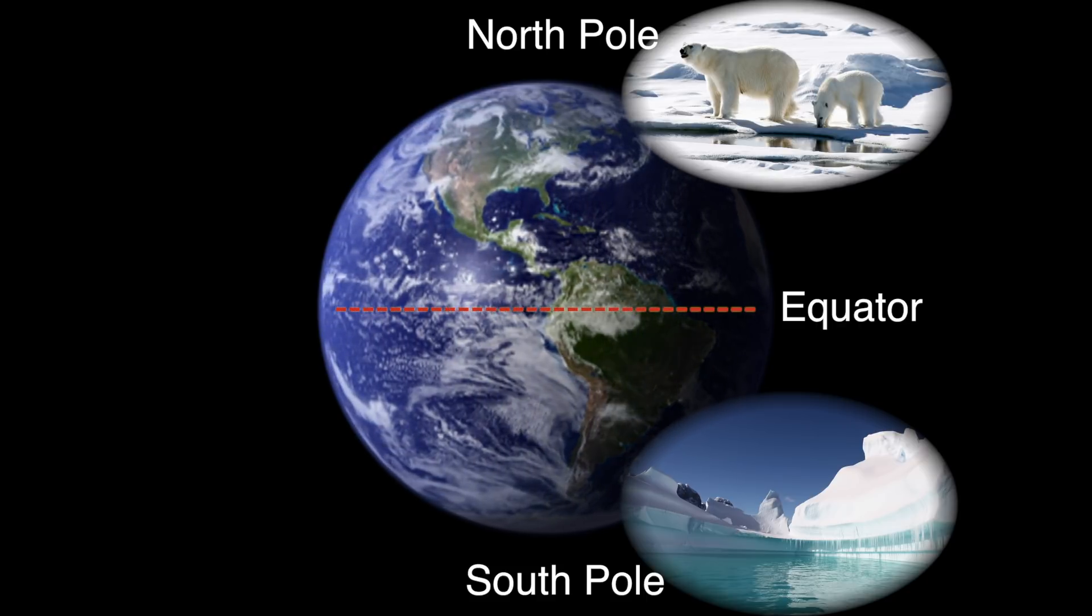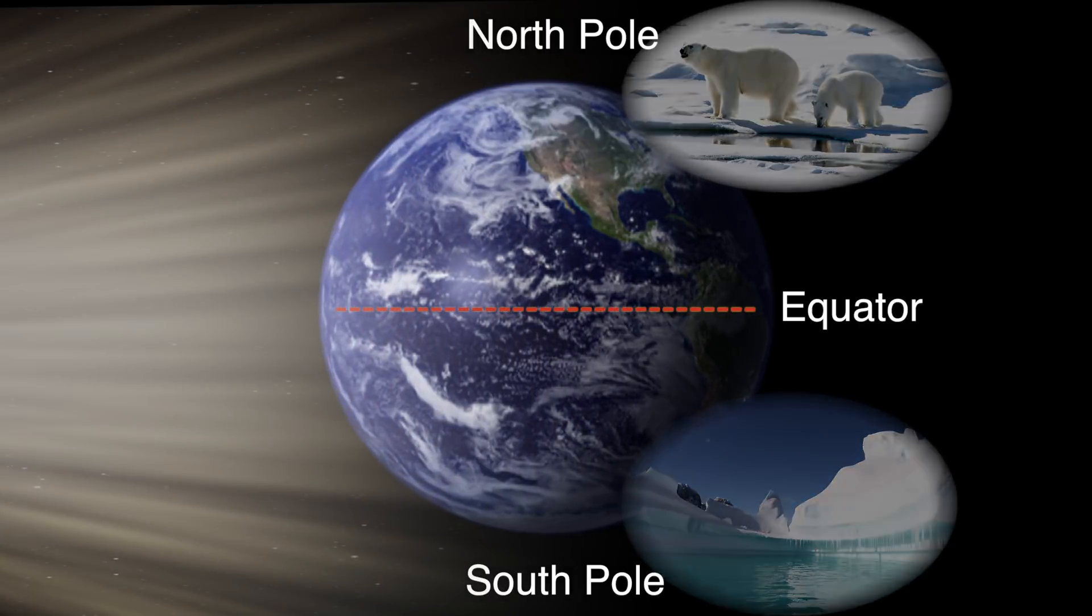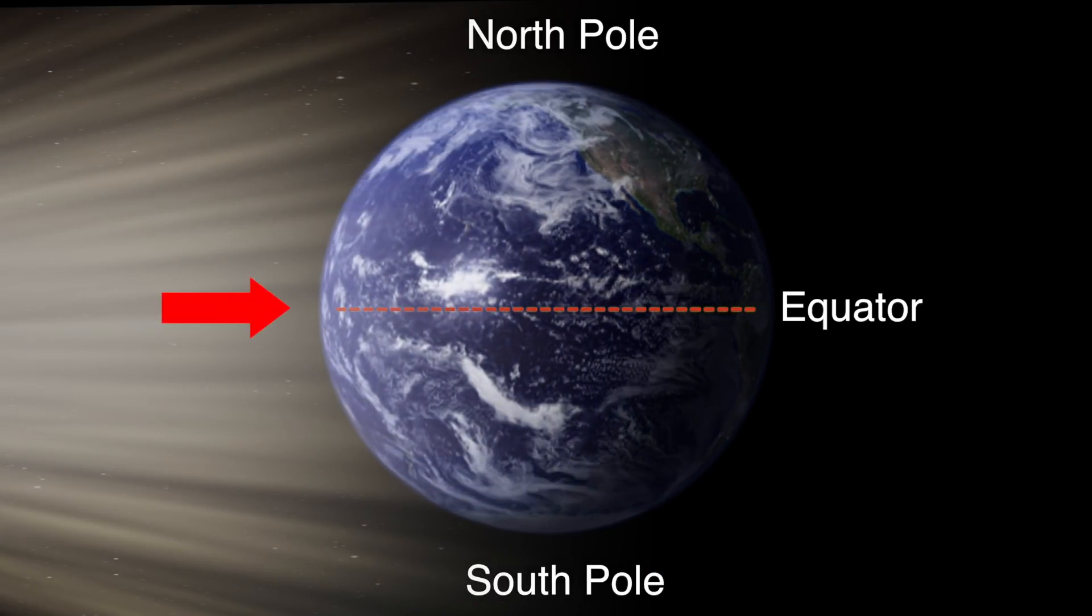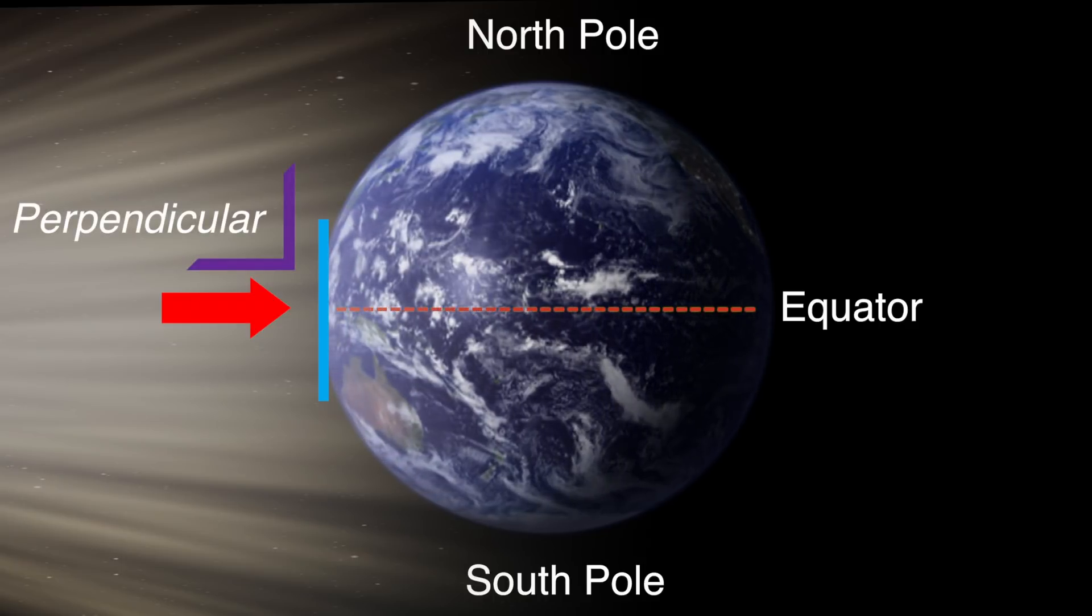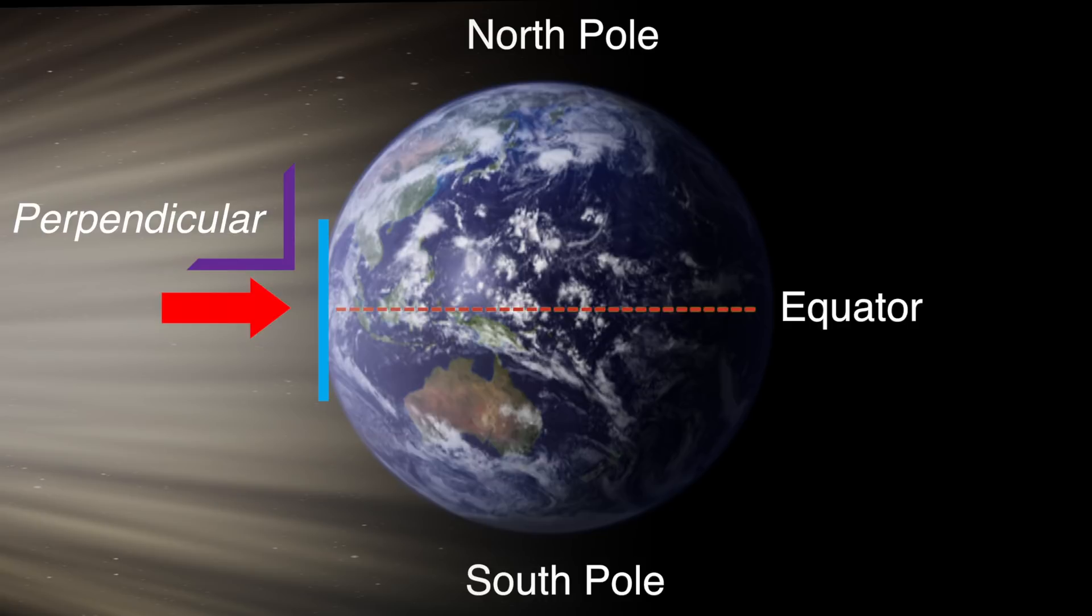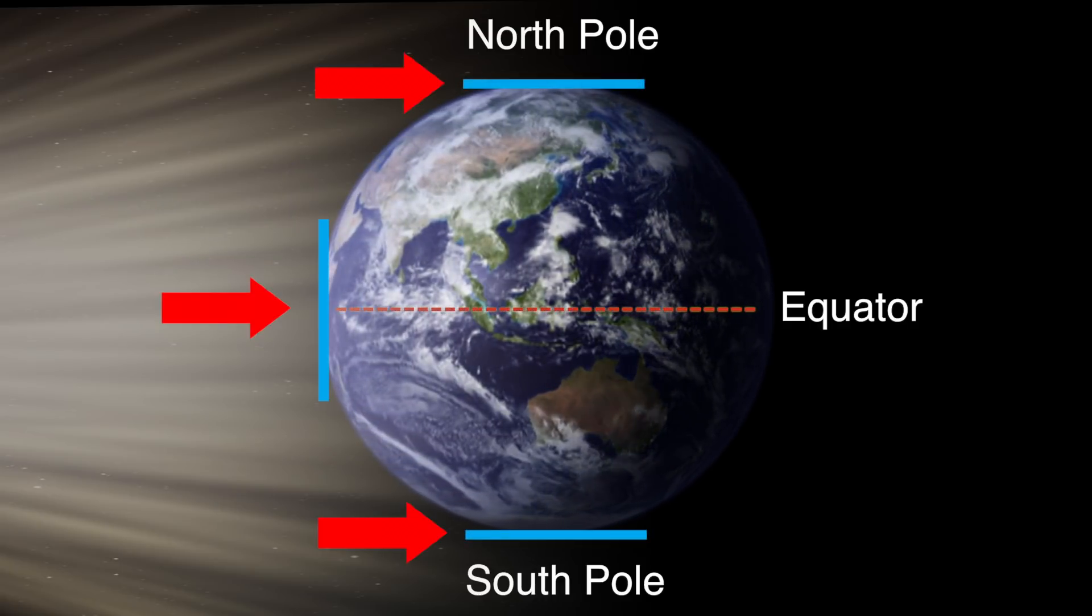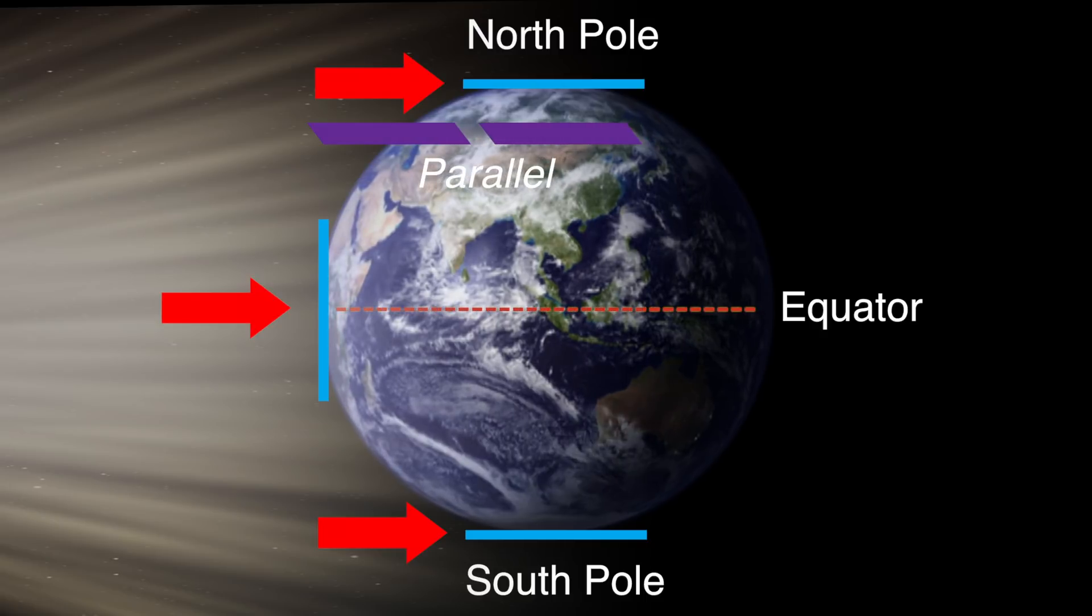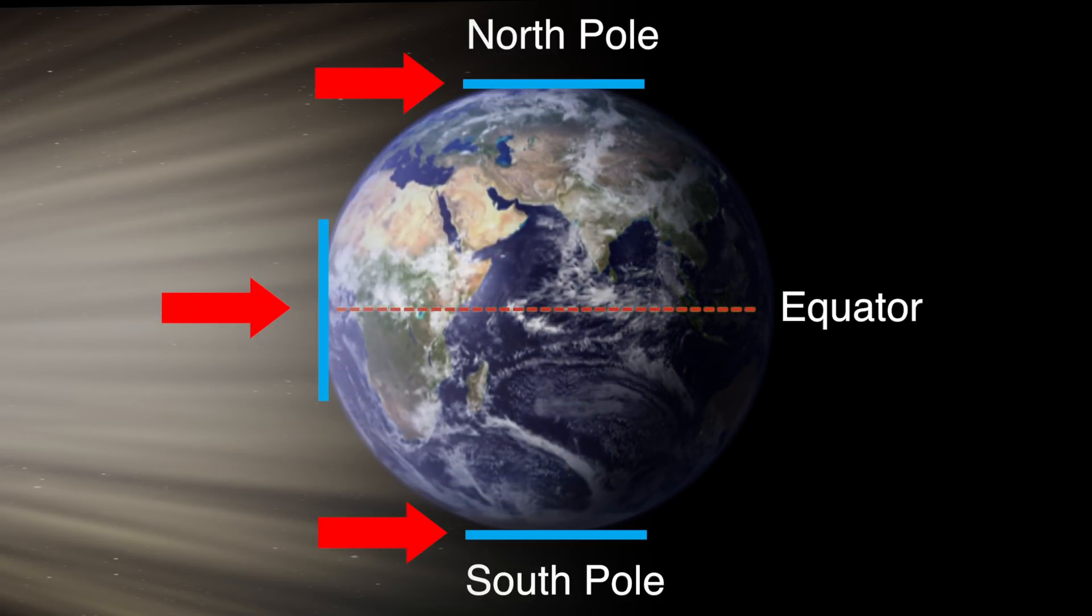To answer this, we need to think of the direction sunlight is traveling in, relative to the Earth's surface. The surface of the Earth at the equator is perpendicular, meaning at a right angle to the sun's rays. This means the rays hit directly into the surface. But at the poles, the surface of the Earth is parallel to the sun's rays. They go in the same direction. This means that very little of the sun's energy actually hits the Earth's surface here.